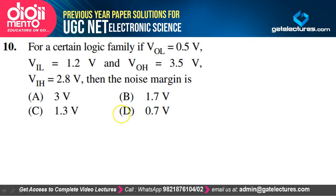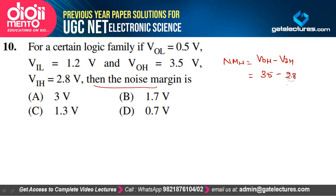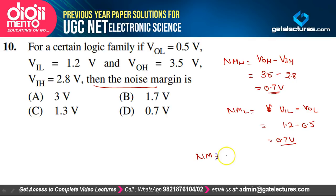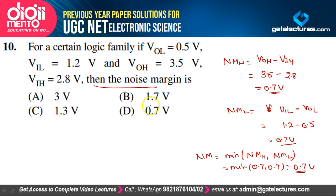For a logic family with VOL = 0.5 V, VIL = 1.2 V, VOH = 3.5 V, VIH = 2.8 V: High noise margin = VOH − VIH = 3.5 − 2.8 = 0.7 V. Low noise margin = VIL − VOL = 1.2 − 0.5 = 0.7 V. Overall noise margin = min(0.7, 0.7) = 0.7 V. Option D is correct.